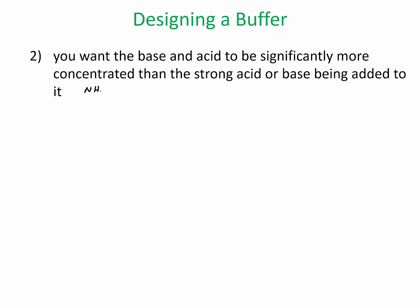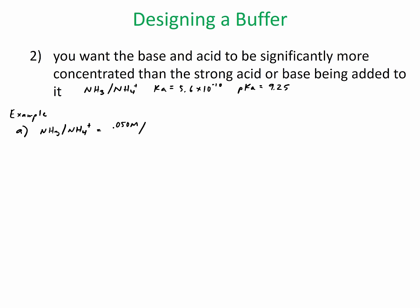I'm going to use the conjugate acid-base pair of ammonia (NH₃) and the ammonium ion (NH₄⁺). The Ka for this is 5.6 × 10⁻¹⁰, and the pKa, which will be useful for the buffer problem, is 9.25. Example A: this pair NH₃ and NH₄⁺ is going to be in these amounts — 0.050 molar of the base and 0.15 molar of the acid.